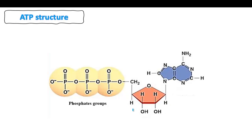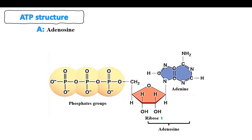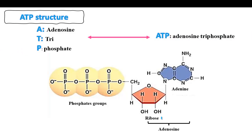The second part of ATP is a five-carbon molecule called ribose, which is a monosaccharide. This ribose is connected to a nitrogen base called adenine. The association between adenine and the ribose makes adenosine. So the term ATP refers to: A for adenosine, T for three, and P for phosphate — so ATP is adenosine triphosphate.